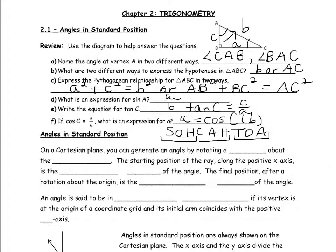For part F, if cosine of angle C is equal to little a over little b, what is the expression for little a? We rearrange that equation to isolate little a by multiplying both sides by little b. We get our new expression for little a to be cosine of angle C times little b.